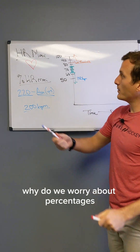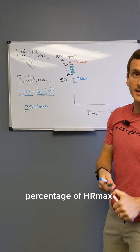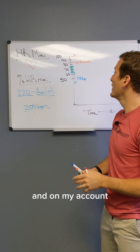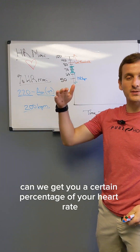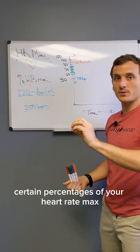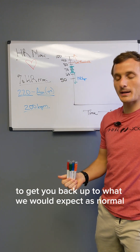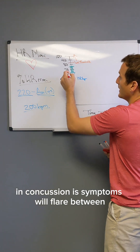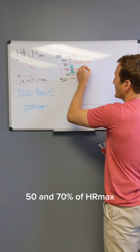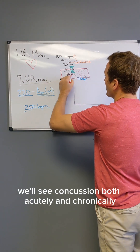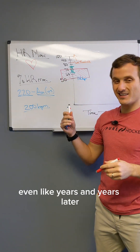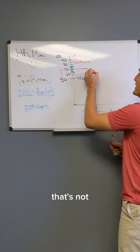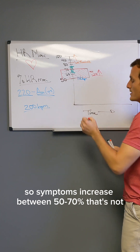So let's bring this into the context of concussion and post-concussion. Why do we worry about percentages of heart rate max? Because I have a predominantly concussion-focused practice, what we're looking at is: can we get you to certain percentages of your heart rate max? If we can't, we prescribe specific percentages to get you back to normal. What we typically see in concussion — both acutely and chronically, even years later — is that symptoms flare between 50 and 70% of heart rate max.